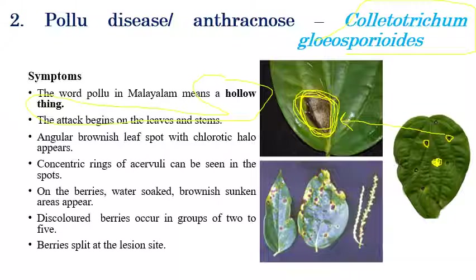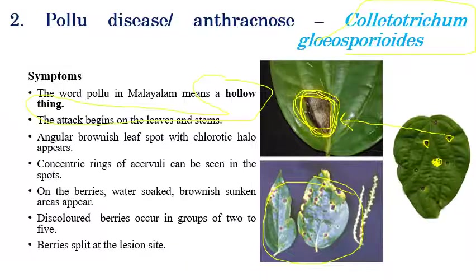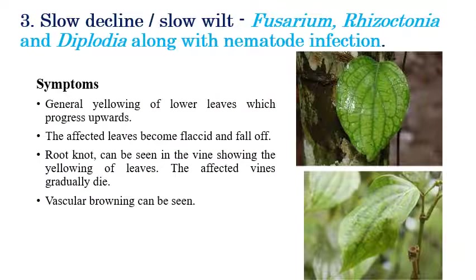If magnified, acervuli can clearly be seen. On berries, water-soaked lesions along with sunken spots can be observed. In later stages, yellow discoloration appears, leaves slowly turn lemon color, and premature defoliation occurs.